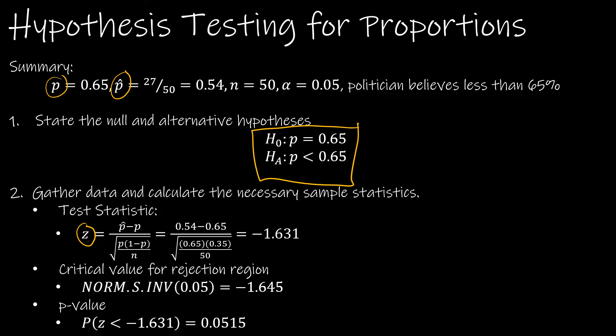Remember, there's two ways to think about rejecting or failing to reject: using the rejection region or the p-value. If I look at the critical value, I'm using 0.05 because this is a negative score to the left of 0. By plugging norm s inverse of 0.05, we get negative 1.645. We can see that negative 1.631 does not fall in the rejection region, so we would fail to reject.